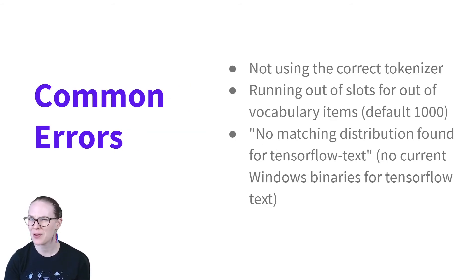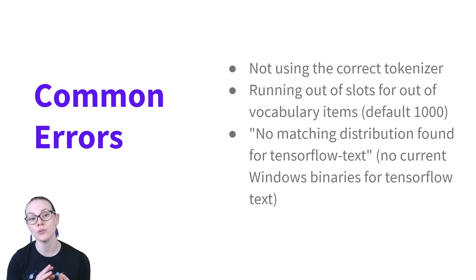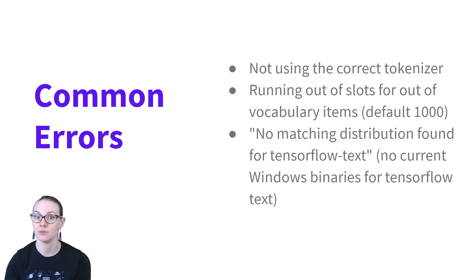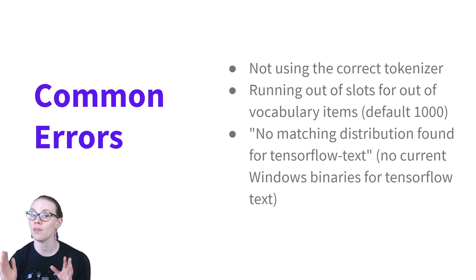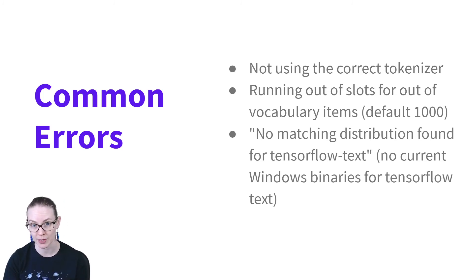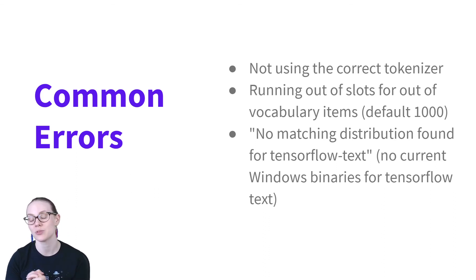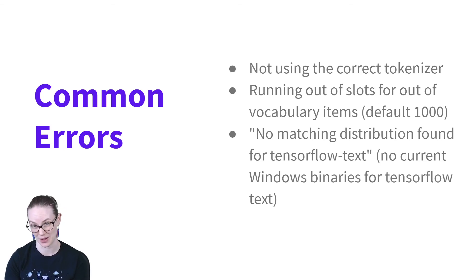What are some common errors? A big one is not using the correct tokenizer. ConveRT uses a custom subword tokenizer that was used during training, and if you don't use the same one at inference time, it's not going to work. Another common error is running out of slots for custom vocabulary items — the model has space for 1,000 out-of-vocabulary items, and if you have more than that, you'll run into memory errors. Finally, if you're working on Windows, you'll run into trouble installing ConveRT because it relies on TensorFlow Text, which currently does not have a supported Windows binary.